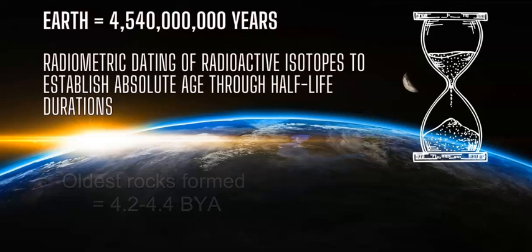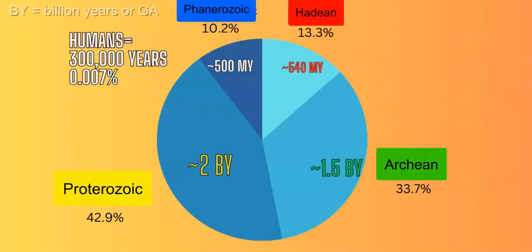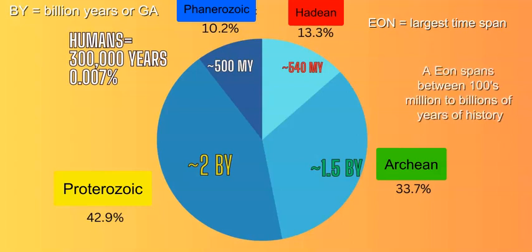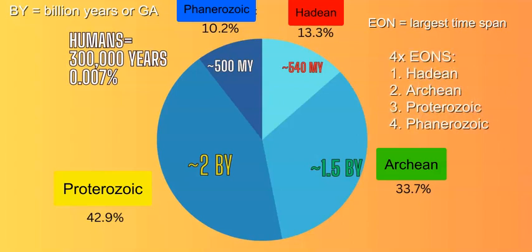This is a very long time, and the way to look at this long history of the Earth is to break it into four distinct eons. An eon is the longest time span of history, spanning hundreds to billions of years. There are four distinct eons in the history of the Earth: the Hadean, the Archean, the Proterozoic, and the Phanerozoic.